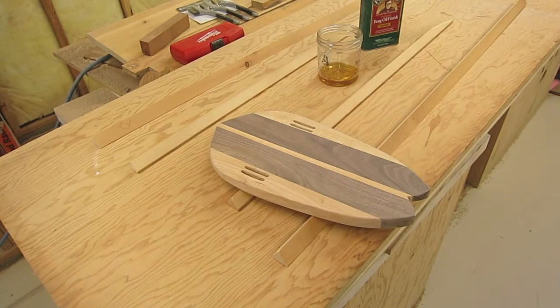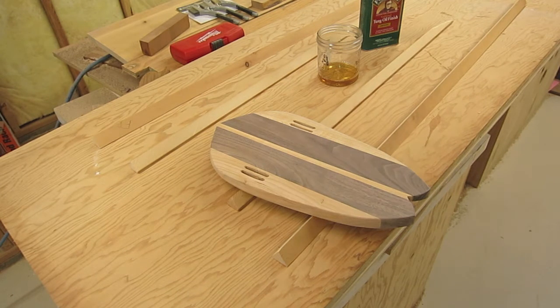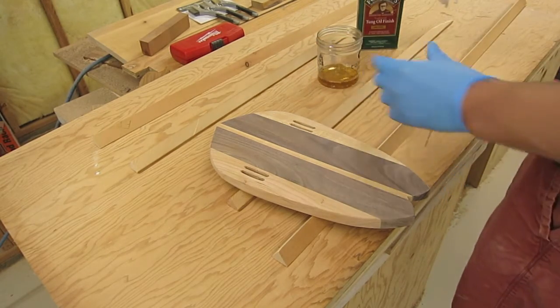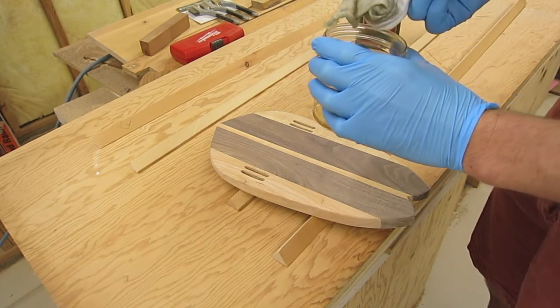I've finished the final sanding. I've blown it out with the air compressor. And now we're just going to apply our traditional tung oil finish. It's Formby's. It's not true tung oil, but we're going to use this for the first few coats to seal it.